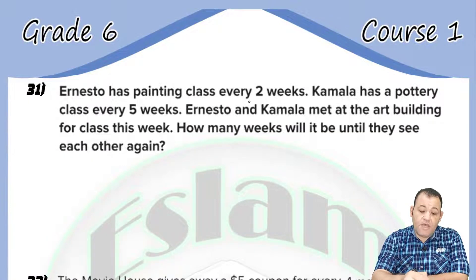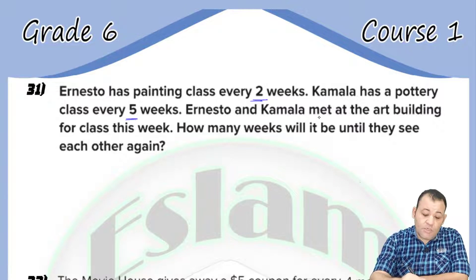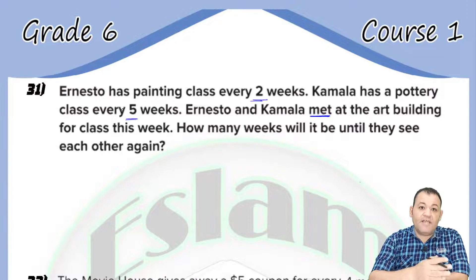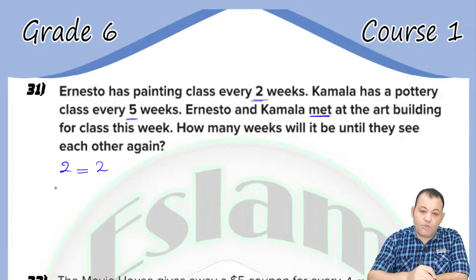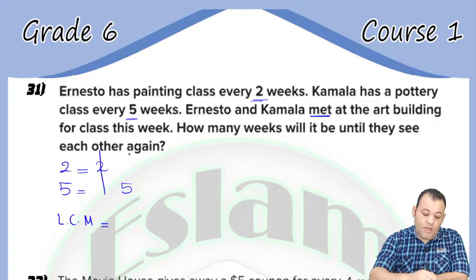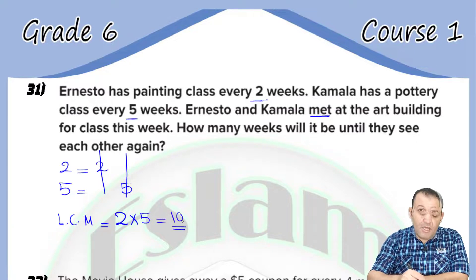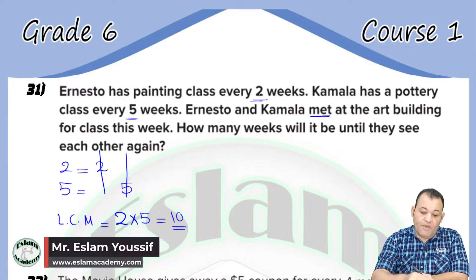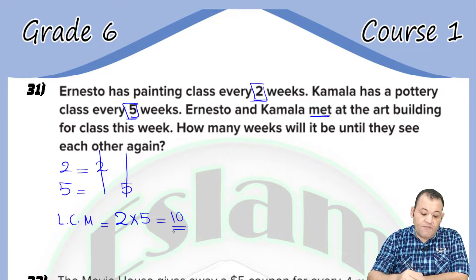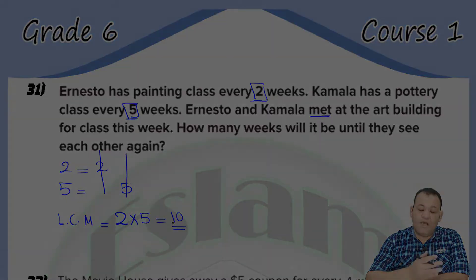For the next problem: Renisto has a painting class every 2 weeks. Kamala has a poetry class every 5 weeks. We need to find when they will meet together. Finding when they meet means finding the lowest common multiple of 2 and 5. Since both 2 and 5 are prime numbers, the lowest common multiple is 2 multiplied by 5, which equals 10. They will meet together every 10 weeks — that's how we use the greatest common factor and the lowest common multiple in problem solving.